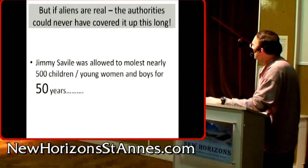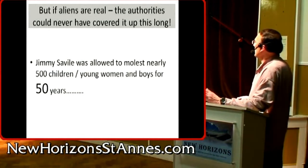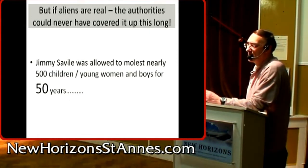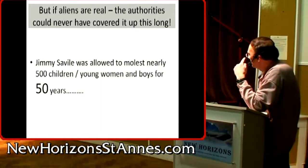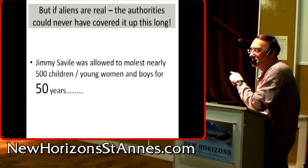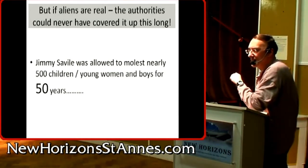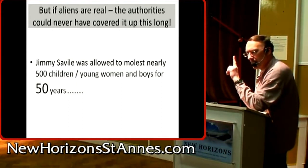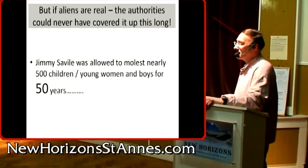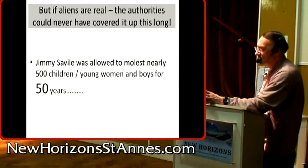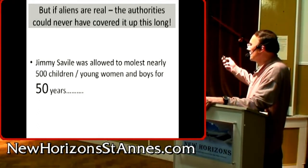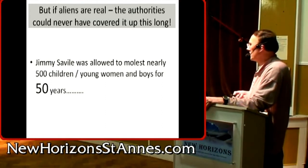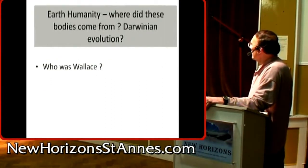If aliens are real, how could the authorities cover it up this long? Consider: a certain individual did what he did for 50 years and the establishment knew and covered it up. If they could cover up one person for 50 years, they could cover up something much, much bigger — from a global perspective, aliens coming here. They have a very clever means of keeping the lid on things.